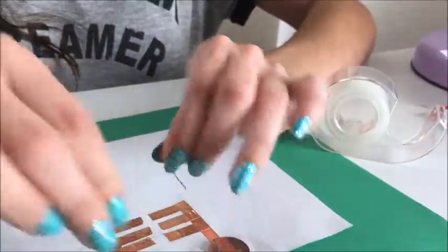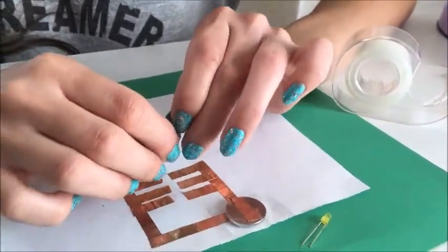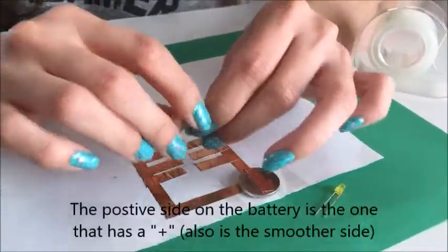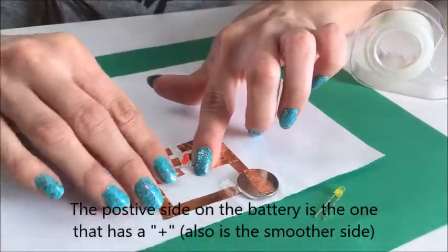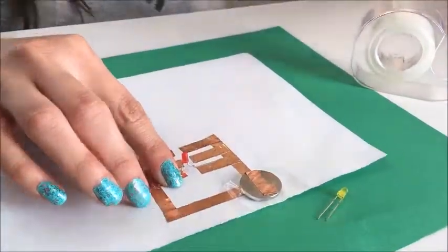Be very gentle as they can break very easily. You will want the positive leg to touch the positive copper tape, which means that the copper tape that is touching the positive side on the battery will be the positive.